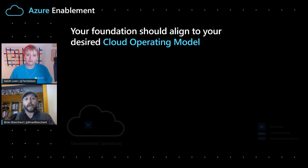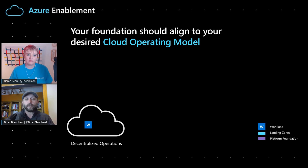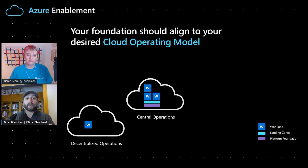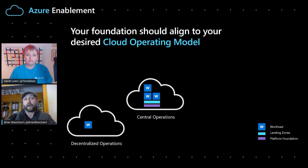We've broken up operations into four key operating models. The first is decentralized operations — this is for customers where everything centers around a single workload or one workload at a time, with workload operations at the center of everything. Not a whole lot of centralization, but tons of room for innovation. Then there's the traditional central operations model, where a group of central IT people control access to all production environments. They're the only ones that can get in, so if you're building a new app, you have to go through them for approval, review, governance, and security before they permit the release of that product into the environment they manage.